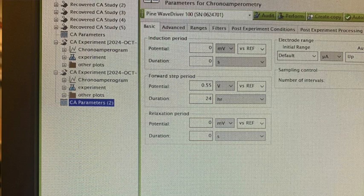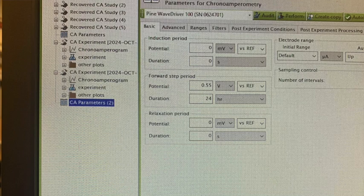Next, you should turn on the potentiostat and open up the aftermath software. You'll open up the CA parameters file and make sure that they are set to zero millivolts versus reference and zero seconds for the induction period. The forward step is all we really care about. In this example, we use a voltage potential of 0.55 volts and a duration of 24 hours, but you should use whatever parameters are necessary for your experiment.